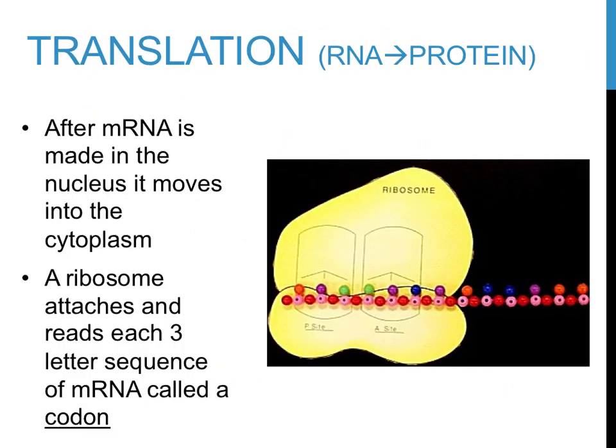The last process involved in the production of proteins from DNA is called translation. In this particular activity, RNA is used to produce proteins. First, messenger RNA, or mRNA, moves from the nucleus where it is produced to the cytoplasm. Second, a ribosome attaches to the messenger RNA strand and reads the code three letters at a time. Each of these three-letter sequences of a messenger RNA code is referred to as a codon, as it codes for a particular amino acid that's going to be made.